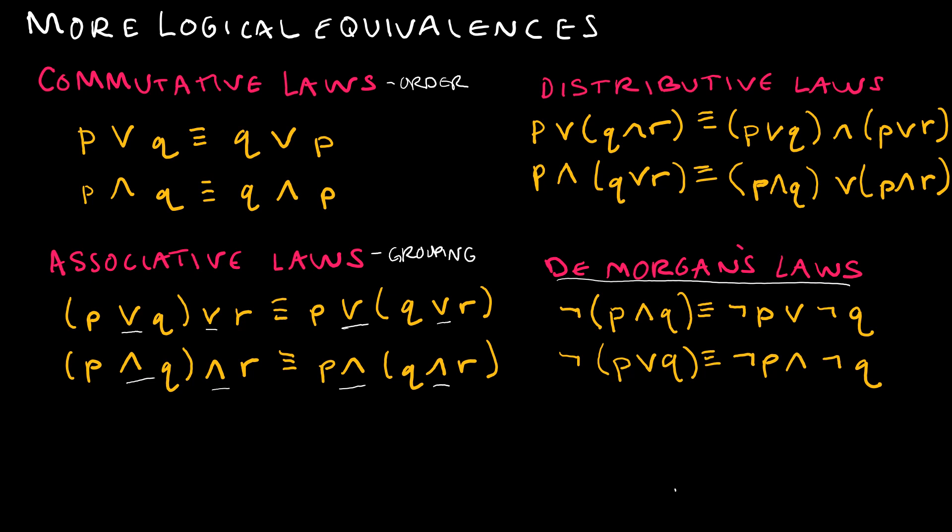And then the distributive laws, this is the one you have to be careful on. So here, if I'm distributing a P or, and notice I've got P or, and now I've got Q and R, then it's P or Q and P or R. So again, we are just distributing the same way you would think of, the P or Q, P or R, with the and in between. Same thing here. They can't be the same sign, so I have P and Q or R.